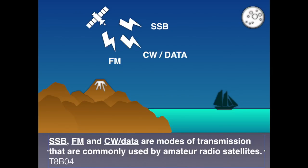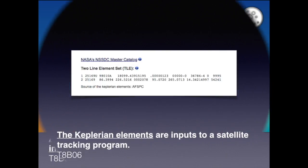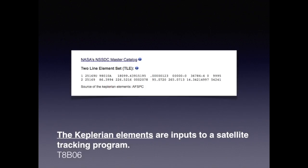With amateur satellites there are various modes we can operate on: single sideband, FM, Morse code, and data. For the exam, know that SSB, FM, CW, and data are modes of transmission commonly used by amateur radio satellites. A transmission from a satellite that contains status information is called a satellite beacon. The Kepler elements are basically a set of coordinates enabling you or your satellite tracking program to find a satellite in three-dimensional space. For the exam, know that Kepler elements are inputs to a satellite tracking program.